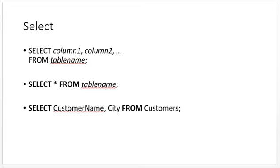We are selecting CustomerName and City from a table called Customers. The SELECT statement is used to select certain data from a table that you want displayed. For example, you have a table with probably 20 rows, but you are only interested in viewing the contents of two columns, so you use the SELECT statement. SELECT CustomerName and City FROM Customers, and SQL will return the contents of those two columns.